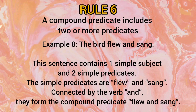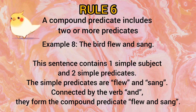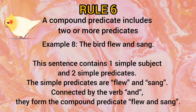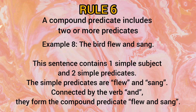Rule number 6: A compound predicate includes two or more predicates. For example, 'The bird flew and sang.' Here, 'bird' is the subject, and 'flew' and 'sang' are both predicates, joined by the conjunction 'and.'